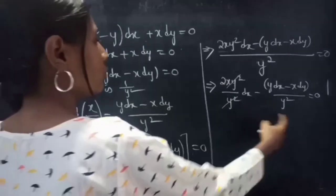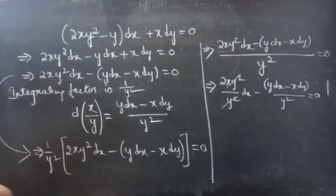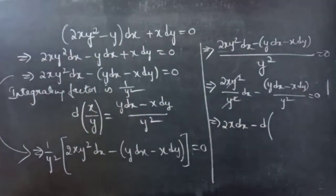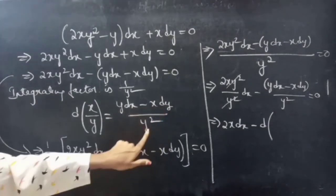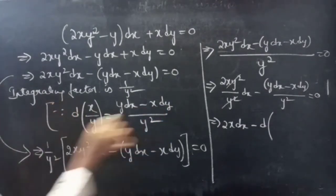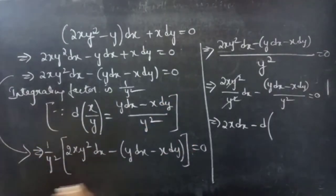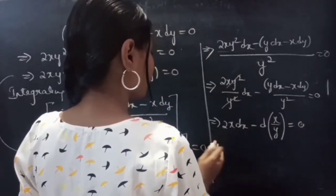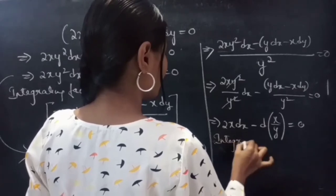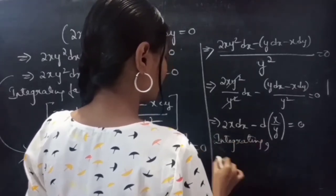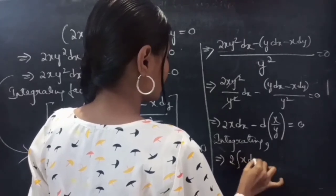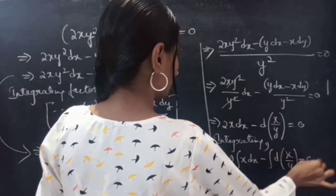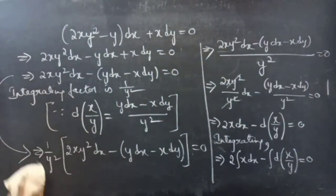After cancellation we get 2x dx − (y dx − x dy)/y² = 0. We can replace (y dx − x dy)/y² with d(x/y). So the equation becomes 2x dx − d(x/y) = 0. Now we integrate both sides.